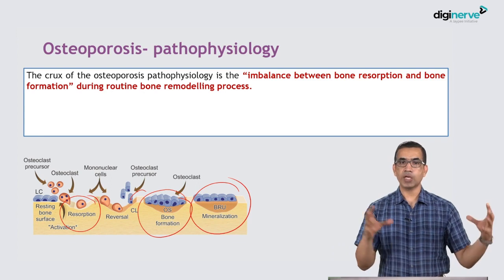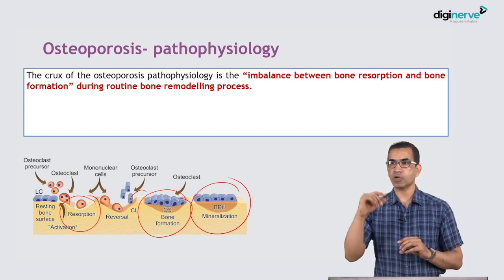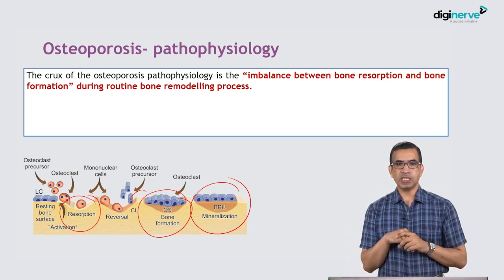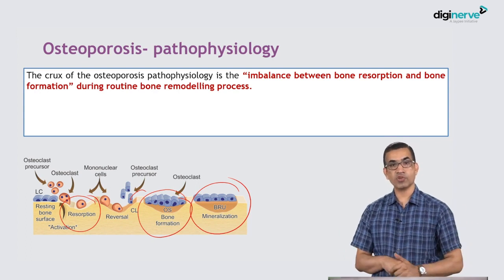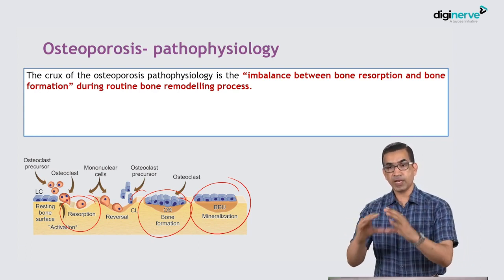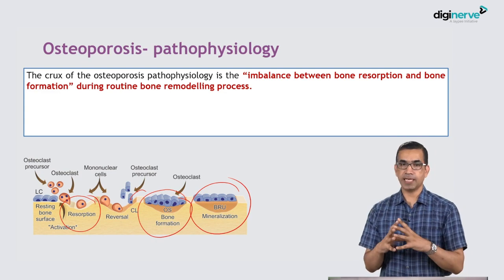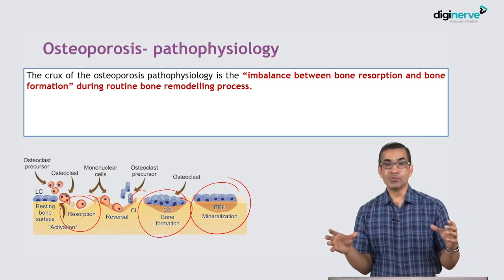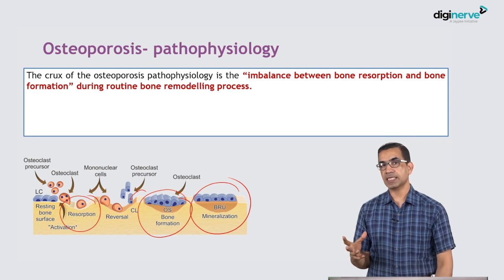Going back to the same analogy: in a room with 80 boxes, the body tries to maintain that balance. One box goes out — damaged — and one box comes in. But after age 40 or 45 in women, more and more boxes are going out and fewer are coming in because of accelerated resorption due to lack of estrogen protection. Eventually, if the minimum boxes required for room strength are 50, and we now have only 49, the structure is prone to damage. That is precisely osteoporosis — an imbalance between bone resorption and bone formation during routine bone remodeling.